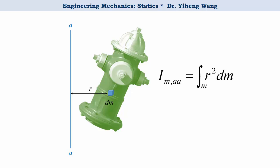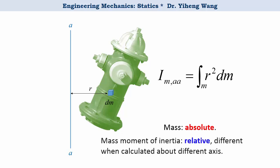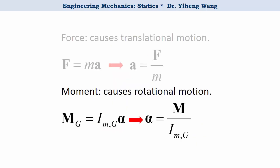So unlike mass, which is absolute, mass moment of inertia is relevant, and it's different when calculated about a different axis. Needless to say, in this moment equation, these two must be calculated about the same axis.